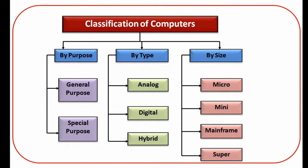Computers can be classified into three types: by purpose, by type, and by size. By purpose, there are two types — general purpose and special purpose. By type, there are three types — analog computers, digital computers, and hybrid computers. Hybrid computers are a mixture of analog and digital computers. By size, the categories include micro computers, mini computers, mainframe computers, and supercomputers.